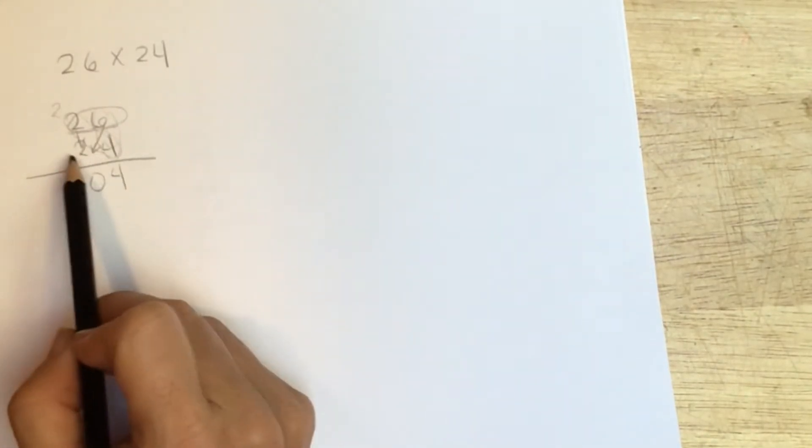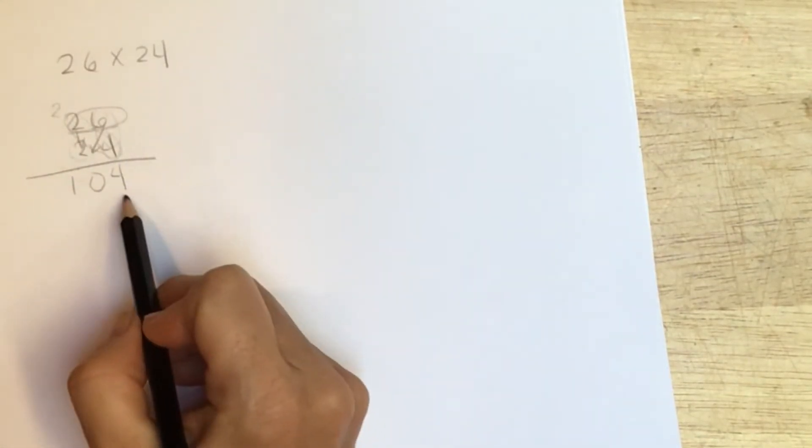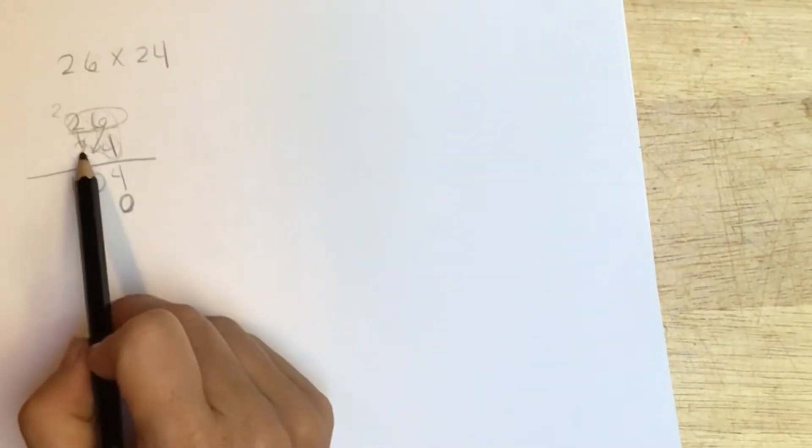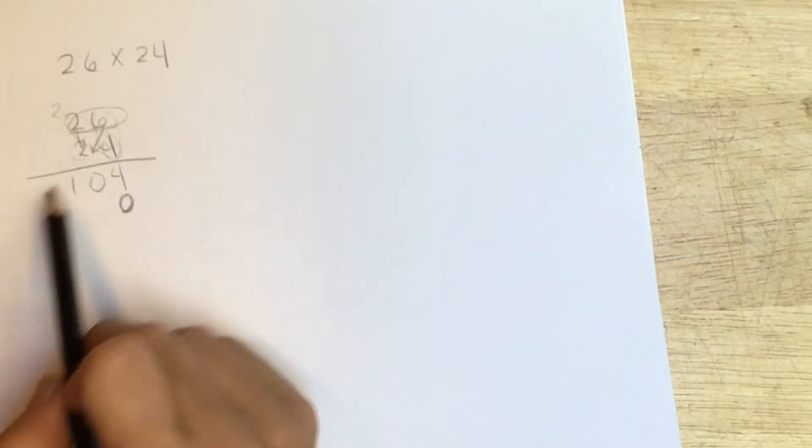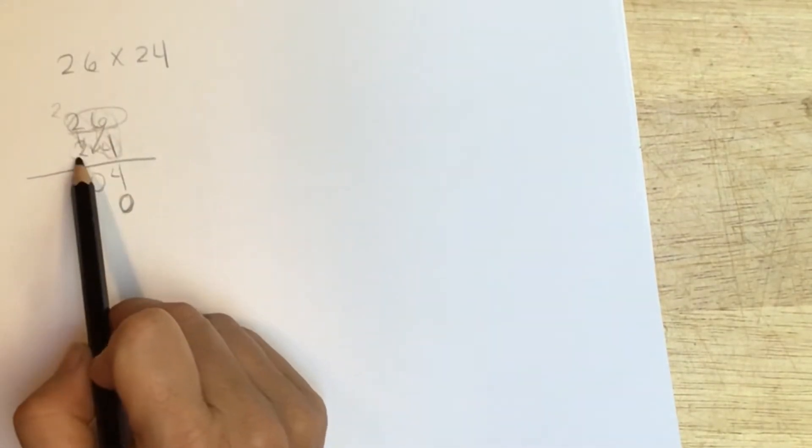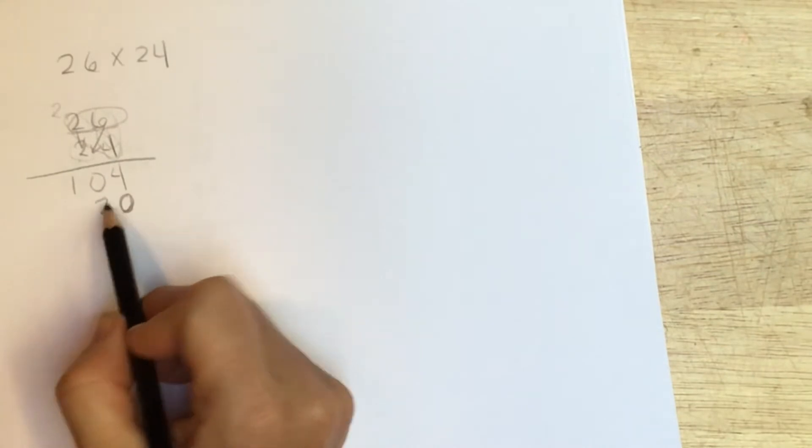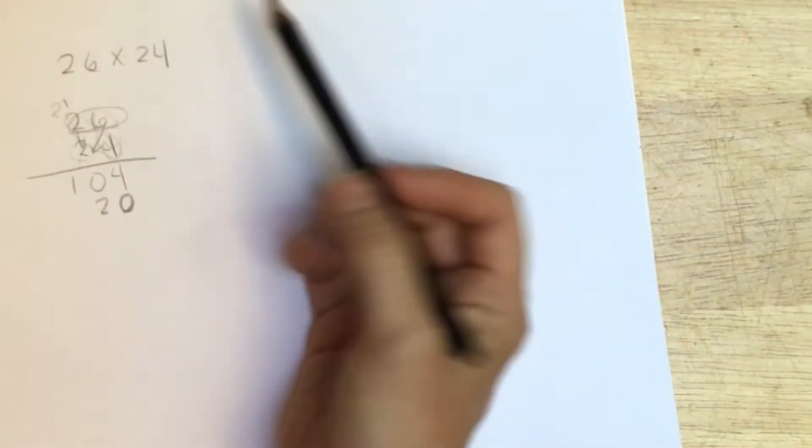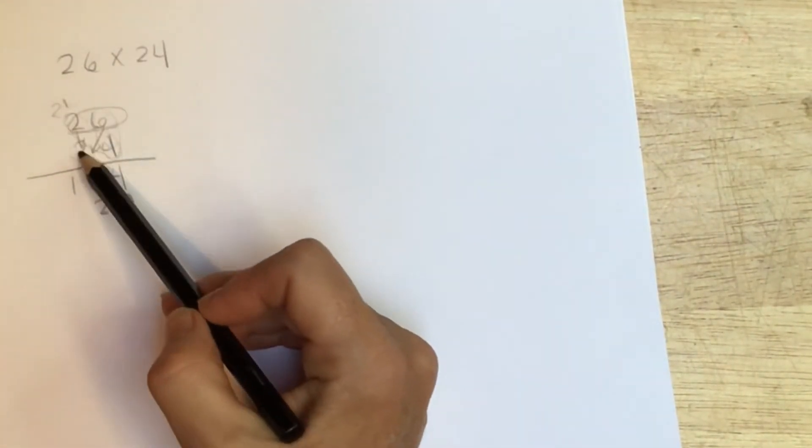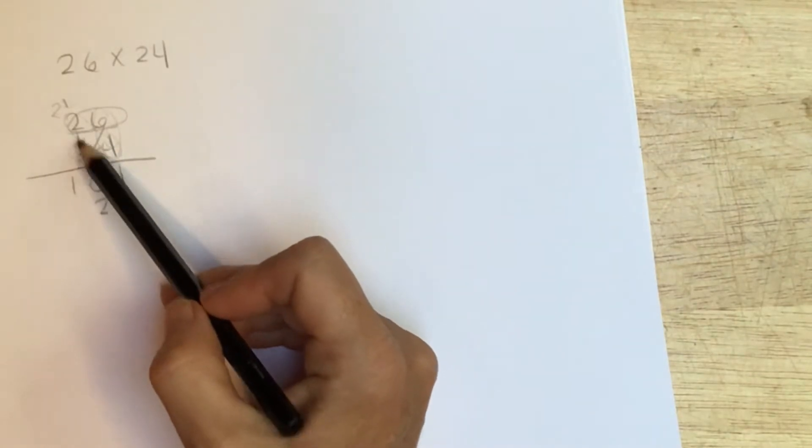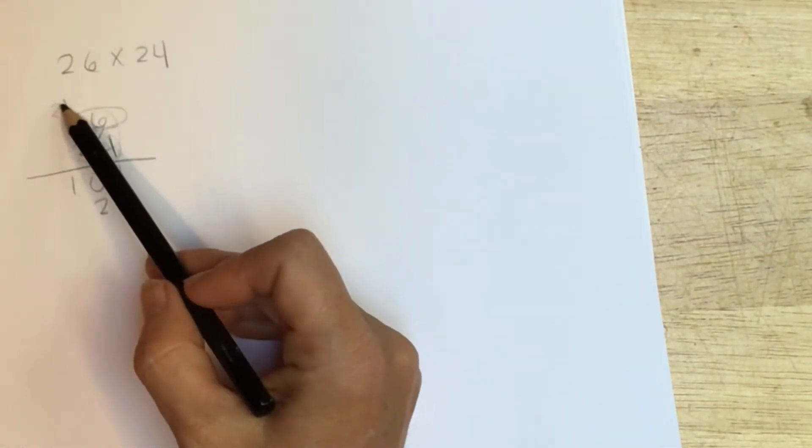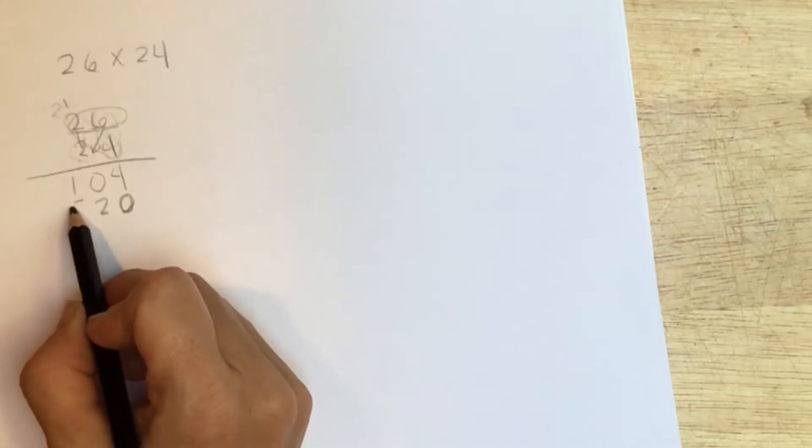Then I'm going to take this number and multiply it by the 2, and this 2 is a tens, so I know that 0 is going to be in this place because this is essentially 26 times 20. So 6 times 2 is 12, I'm going to carry that other hundred over here, and then 2 times, or 20 times 20 is 400, and then that other hundred which gives us 500.